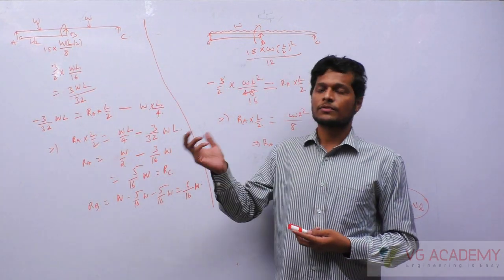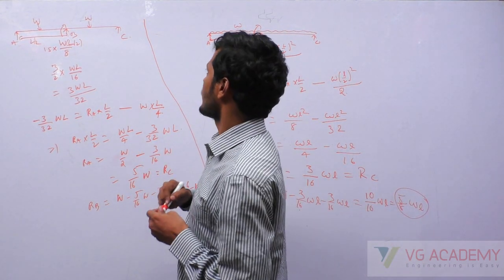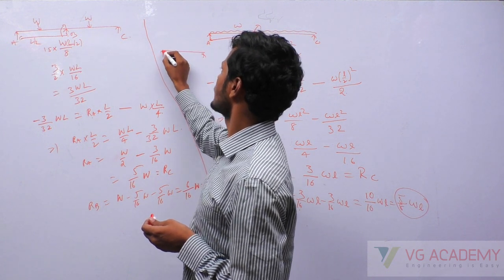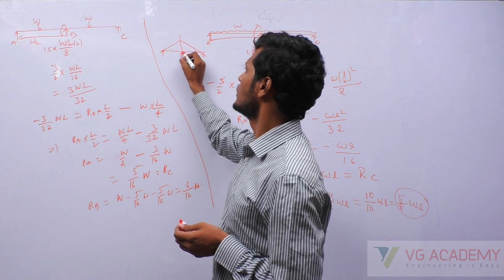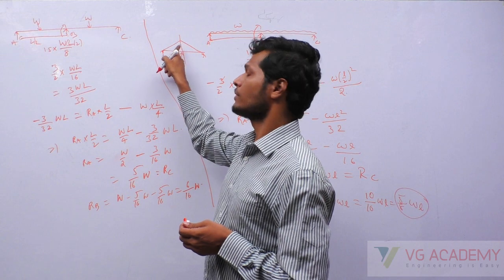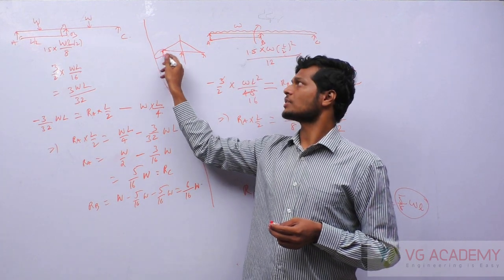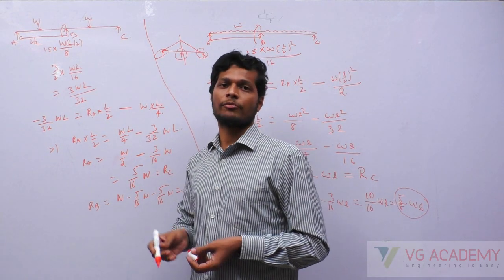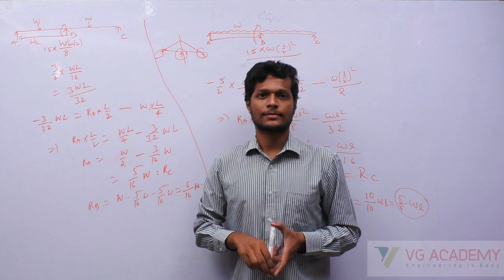In this way you can find the reaction for any symmetrical loading. Suppose you have a UDL case like we discussed — this is also symmetric loading. Similar to what I did, you can find the cantilever moment here, then find the reaction of A and reaction of C, and then find the reaction of B. That is all about this shortcut method.